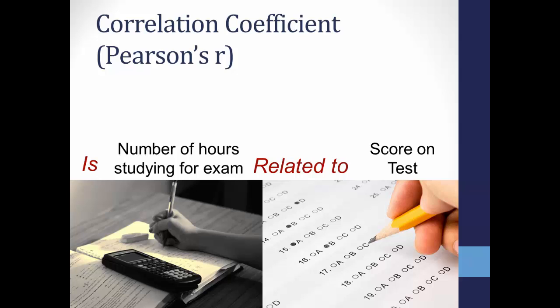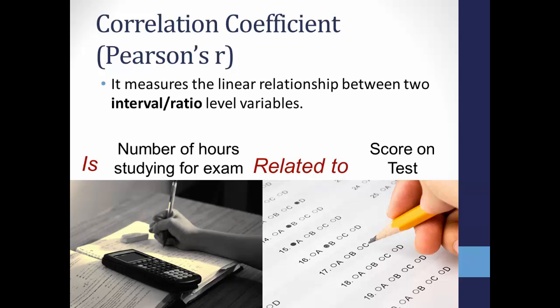To determine if a relationship exists between hours of study and exam score, you would calculate Pearson's R because it measures the linear relationship between two continuous-level variables. They could be gathering interval or ratio-level data.